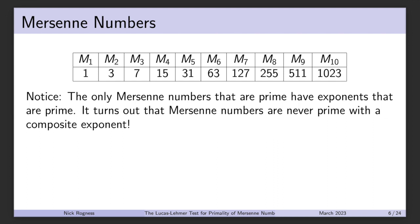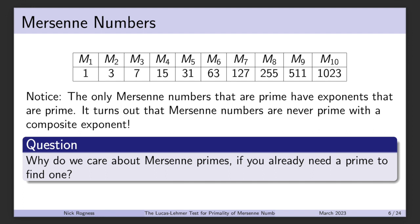Why do we care about Mersenne primes if you already need a prime to find one? It comes down to scale. The 10th Mersenne number is already at 1,000, and these quickly climb because you're essentially doubling the size each time, since they're based on powers of 2. So one of the ways we can get extremely large primes is by using Mersenne numbers.